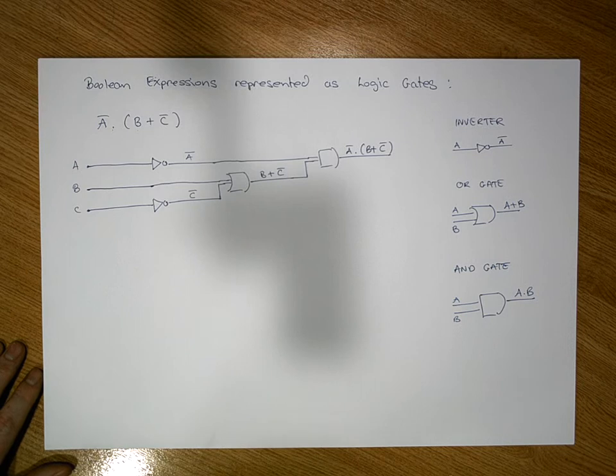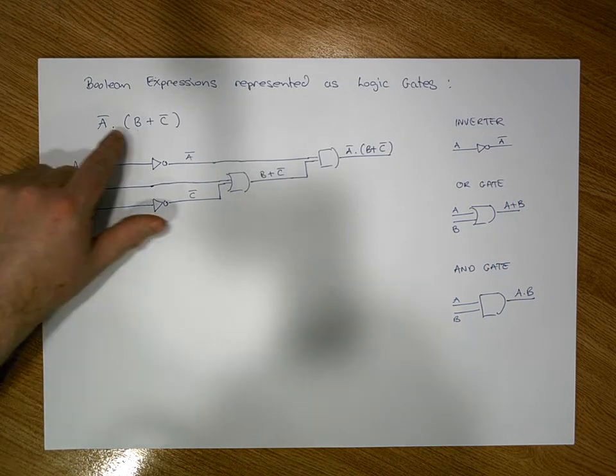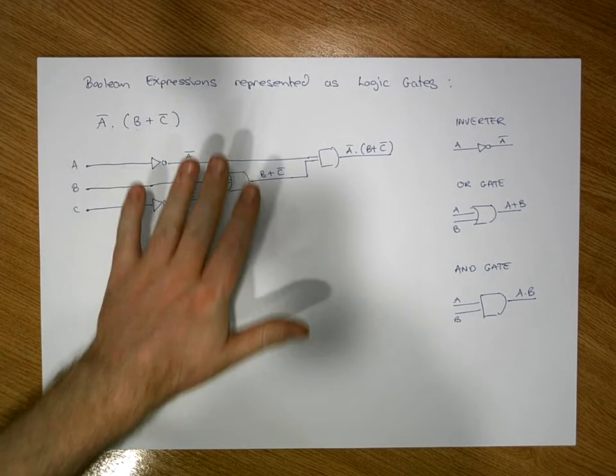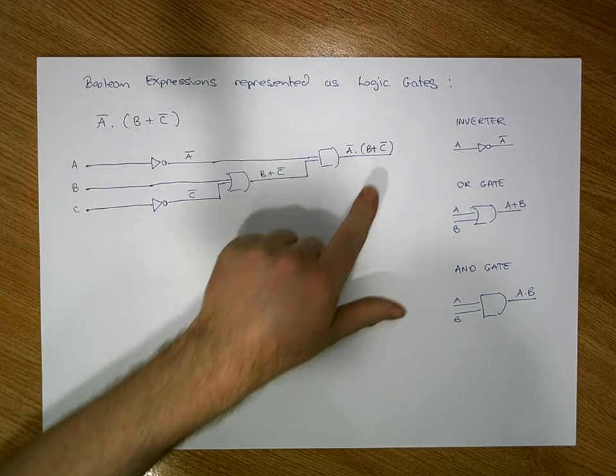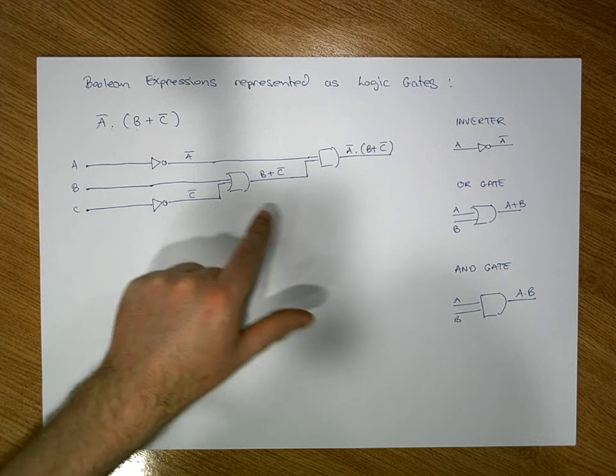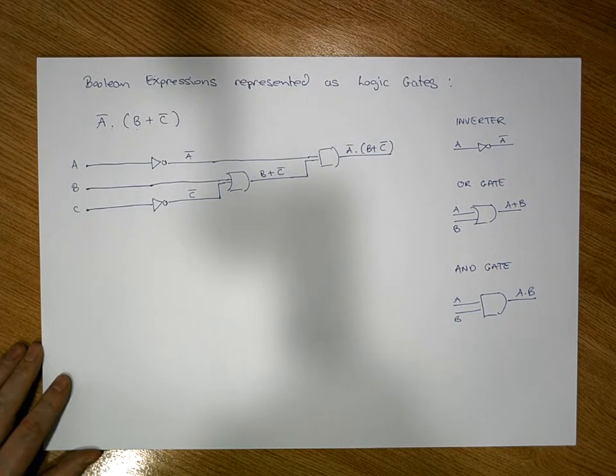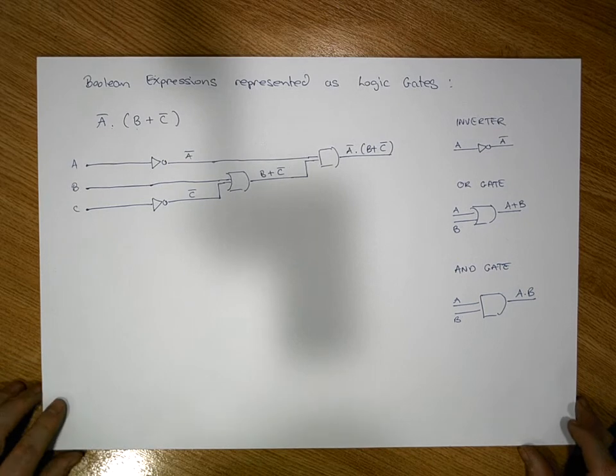This was a pretty straightforward example where we didn't have many inputs and we didn't have many operations to perform, but this particular schematic or circuit is the circuit that would represent this particular Boolean expression. Once again guys, this was Jonathan Lambert with the Mathematics Development and Support Service at the National College of Ireland, and I hope this video was somewhat helpful.